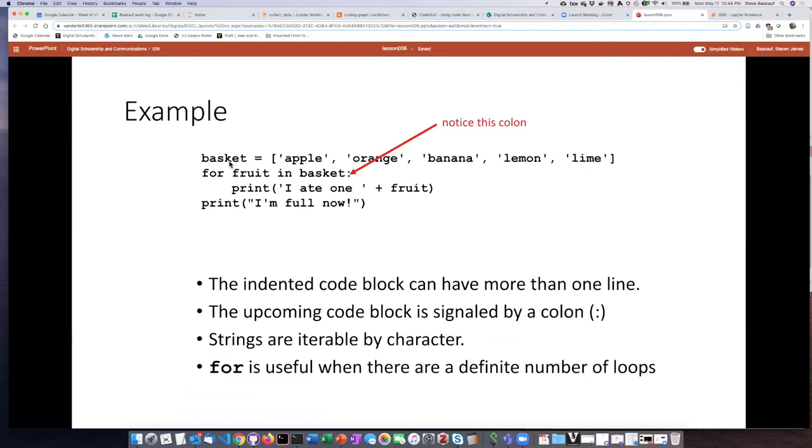So I'm going to set the value of basket. Then I'm going to iterate through each item in the basket and print the string I ate one plus concatenate the end of the particular item that we're talking about right now. So the first time that the loop carries it out, the value of fruit is going to be apple. So it will say, I ate one apple. It's finished the indented code block. It'll go back. And now we go to the next fruit, which is orange. It'll say, I ate one orange.